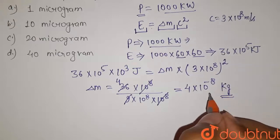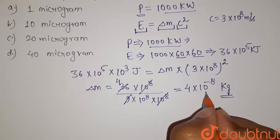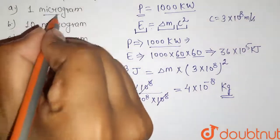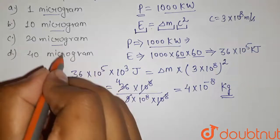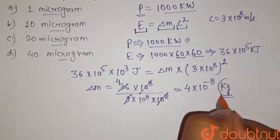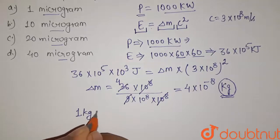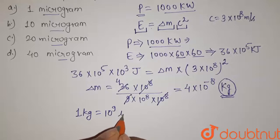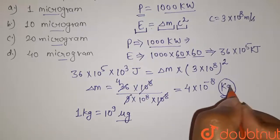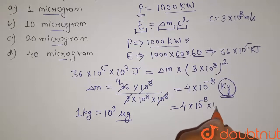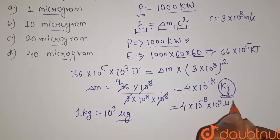It is SI unit, so this is the required mass defect for this process. But in the options, we can see that options are given in micrograms. So we have to convert this kilogram into micrograms, and we know 1 kilogram equals 10 to the power 9 micrograms. So put it here.